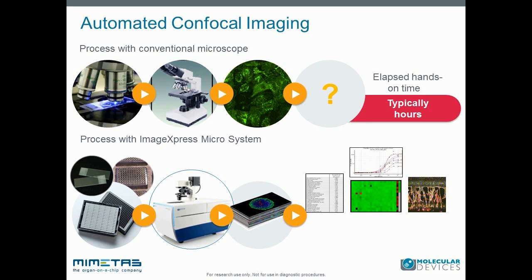By using an automated high-content imaging system, experiments can be just as easily run on anything from microscope slides to 1536-well plates with no compromise in image quality. This includes the ability to image specialty plates, such as the organoplate from MIMITAS for generating 3D structures. The ImageExpress microsystem can be set up in a few minutes, and analysis using the integrated software can occur in parallel with acquisition.